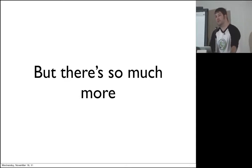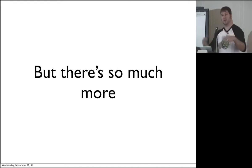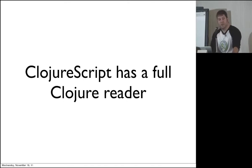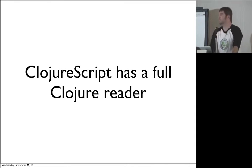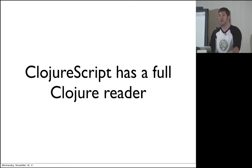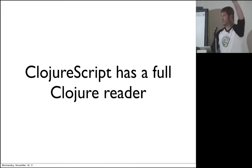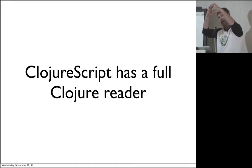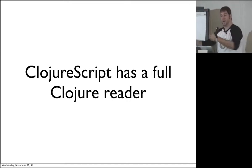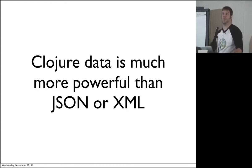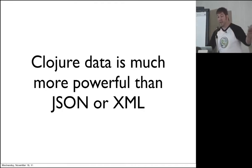As client-side code becomes more and more popular, there are things we don't have. ClojureScript has a Clojure reader in it. If you're familiar with the idea of a Lisp reader — there's a step between you, the textual representation of your code, and the compiler. The reader sits right in between there. It takes the things you've typed and converts them to the data structures the compiler takes in and compiles. So it has a full Clojure reader. That means Clojure data is actually viable as a wire protocol. We can take these rich Clojure data structures and use them instead of JSON or XML.